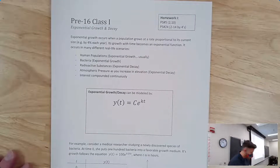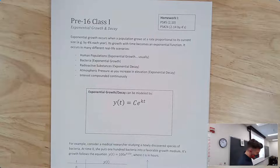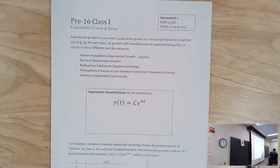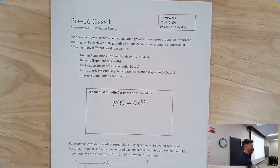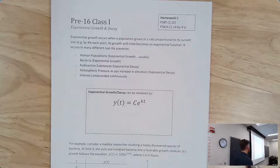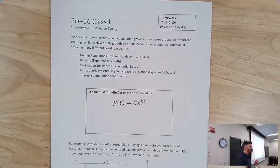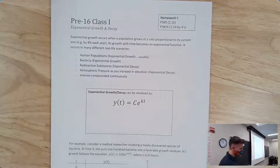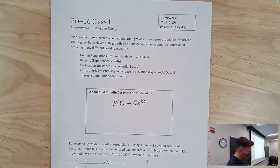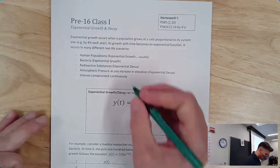Exponential growth occurs when a population grows at a rate proportional to how many people there are. For example, a population growing by four percent each year exhibits exponential growth. This occurs in many real-life situations: human populations, bacteria, radioactive substances showing exponential decay, atmospheric pressure as elevation increases, and interest compounding continuously.